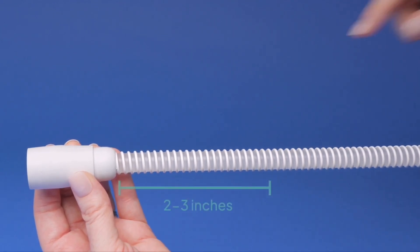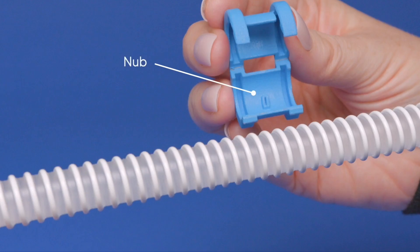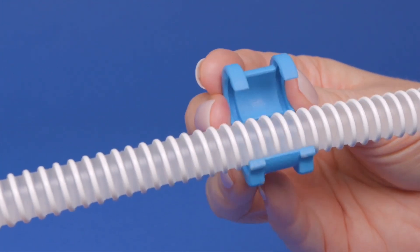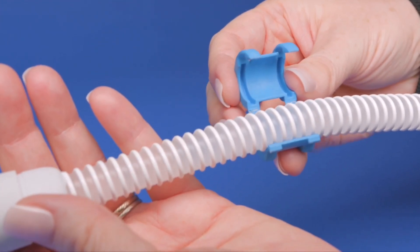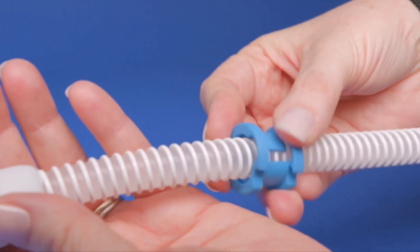Position the hose sleeve 2 to 3 inches from the connector. Position the hose on the nub side of the hose sleeve. Slide the hose until the sleeve clicks into place between two of the hose ribs. Close the hose sleeve.